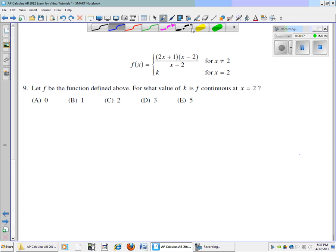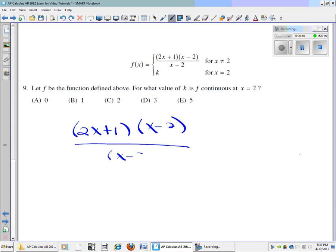Well, when we look at that first part, let's go ahead and write it. We have 2x plus 1 times x minus 2 divided by x minus 2. The very first thing we think of is x cannot equal 2, or I'd get 0 in the denominator. But I also see that I have x minus 2's that are able to cancel. And so immediately I'm thinking I've got a hole in the graph at x equals 2.